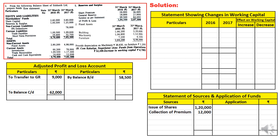Coming back to the balance sheet, under non-current liabilities we have 8% debentures. Debentures last year were zero, and this year we have ₹78,000. Since it is increasing, we call it issue of debentures — ₹78,000 — recorded as a source. If it were decreasing, it would be considered redemption of debentures.